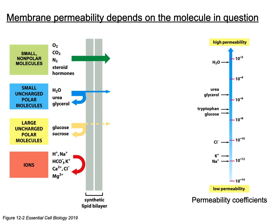Larger polar molecules require transporters because they're too big to squeeze through the phospholipid plasma membrane. Using transporters to move them across also allows us to count and regulate expression of enzymes important for metabolizing those larger molecules, because we can count them as they come in through the receptors.